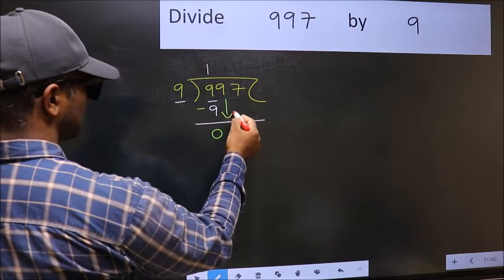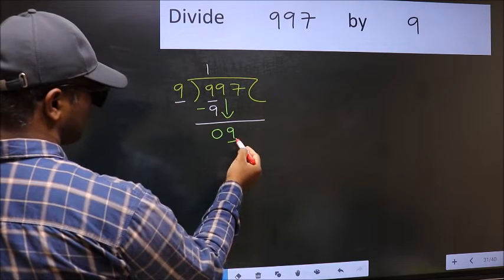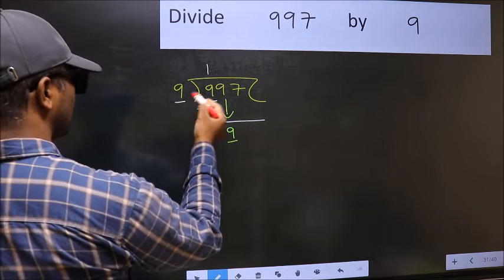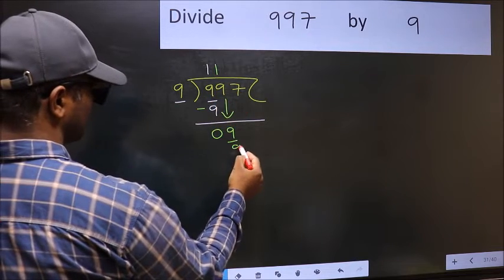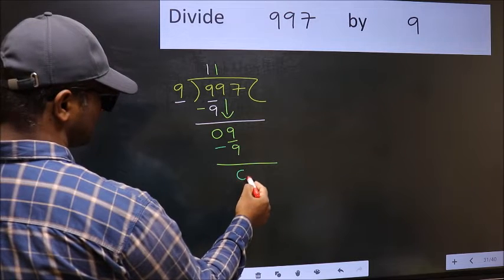After this, bring down the beside number. So 9 down. Now 9, when do we get 9 in 9 table? 9 once, 9. Now you should subtract. 9 minus 9, 0.